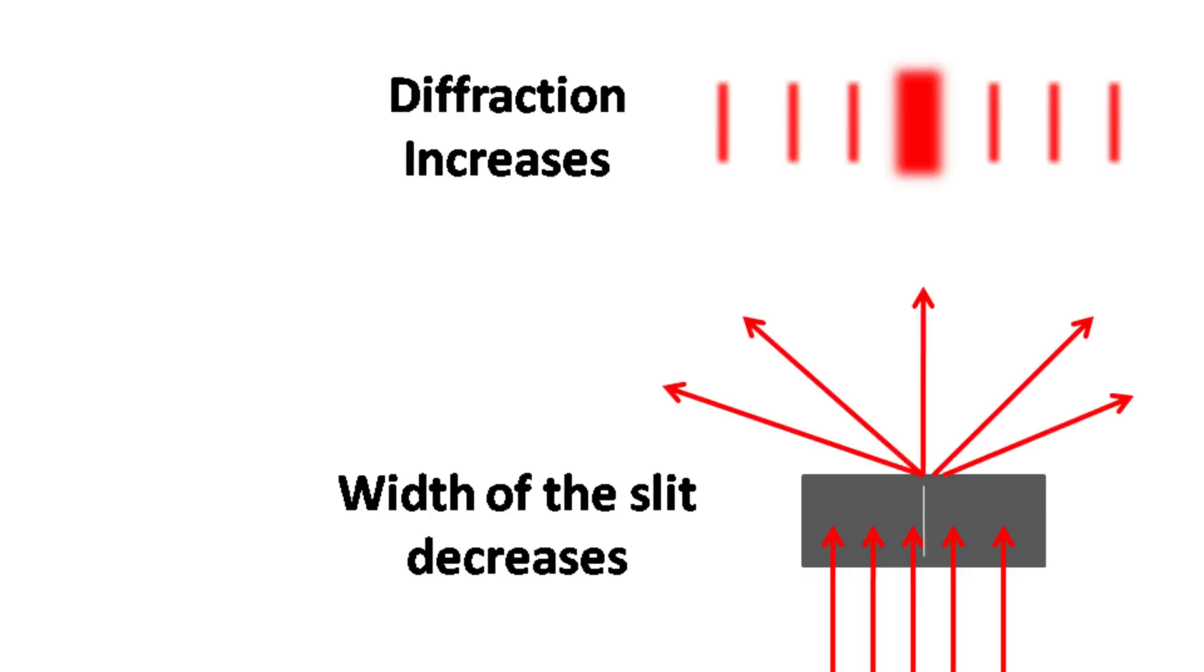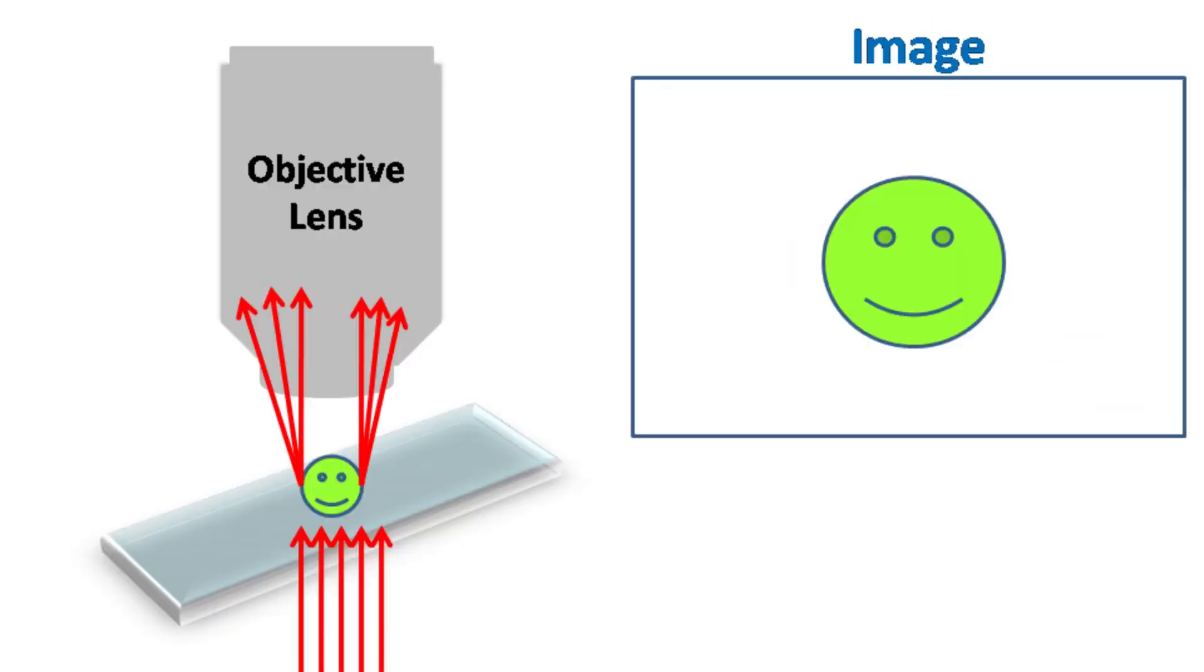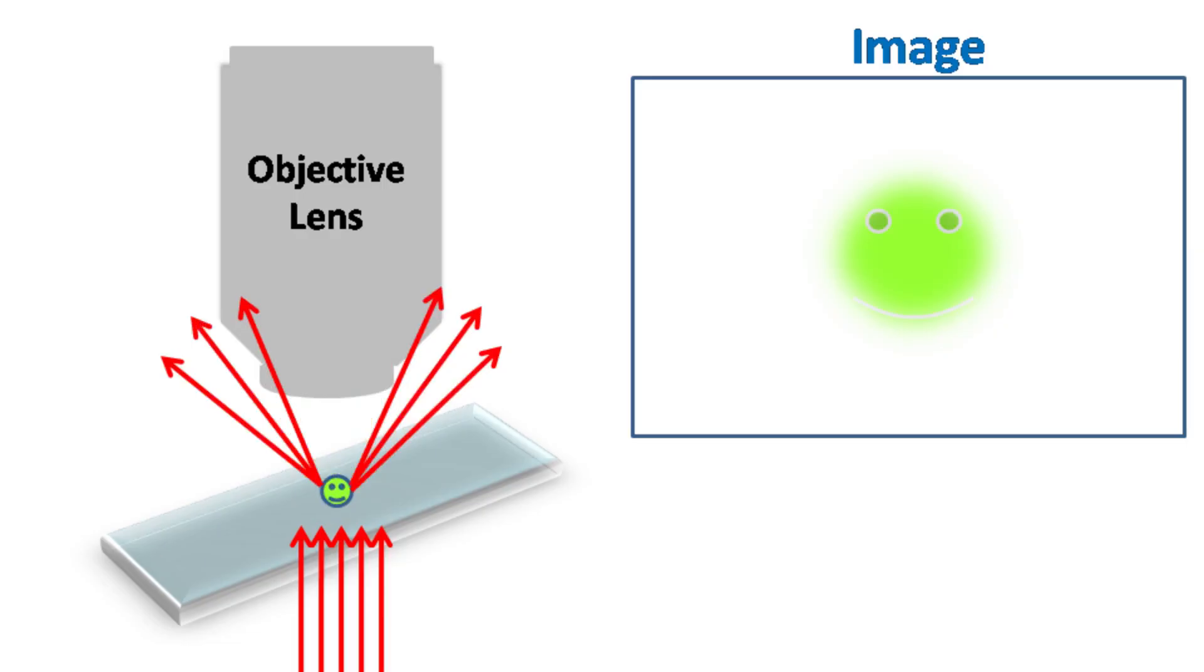As the width of the slit decreases, the diffraction increases. Soon, there comes a point where the objective fails to collect the diffraction pattern. When this occurs, the image formed is blurred. A similar phenomenon occurs when we try to see the small specimen with a microscope. As the specimen size decreases, the image gets blurred.